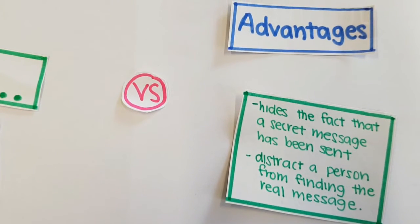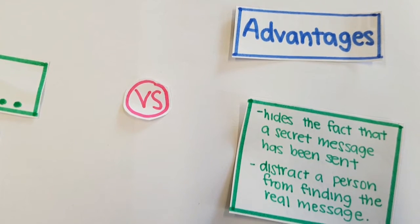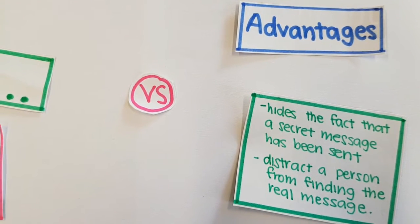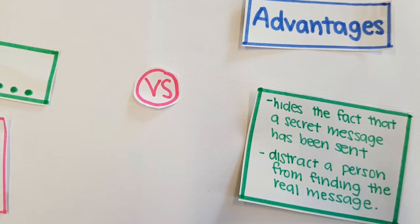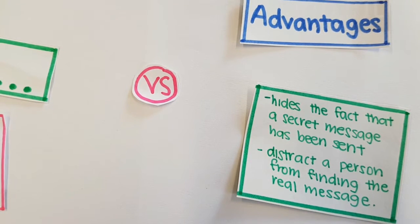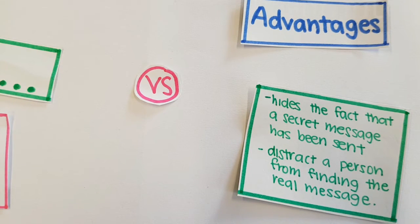Because any message of the right length can be used to carry the encoding, the secret message is effectively hidden in plain sight. The false message can be on any topic and thus can distract a person seeking to find the real message. To get a clearer picture, I will show you what this means in the later part of this video.